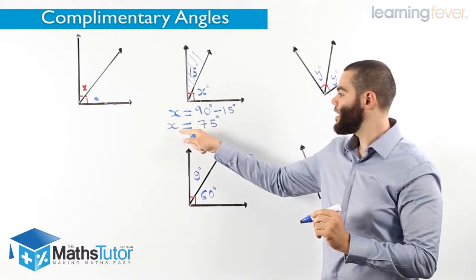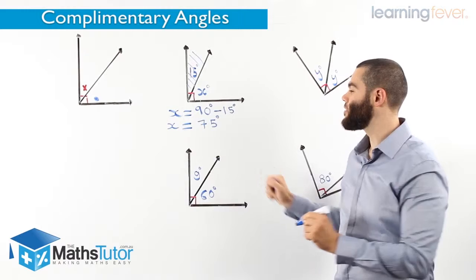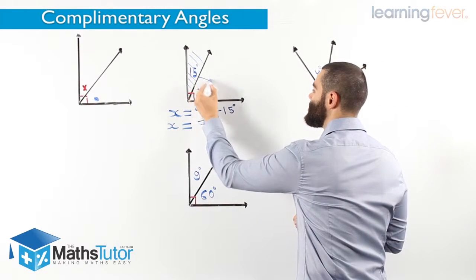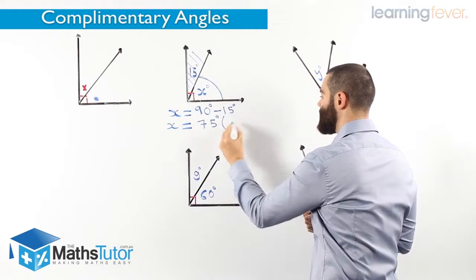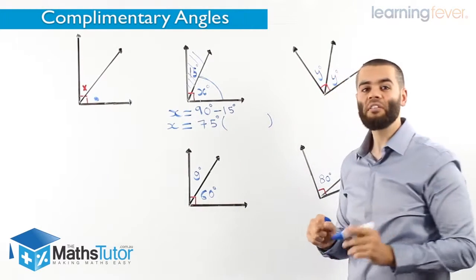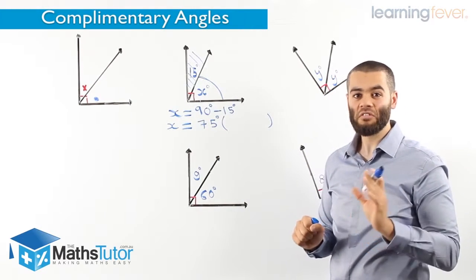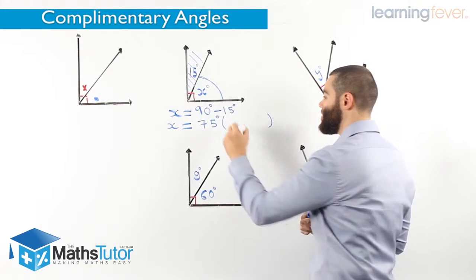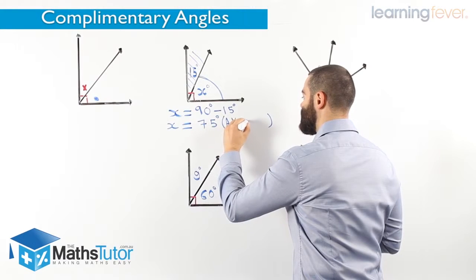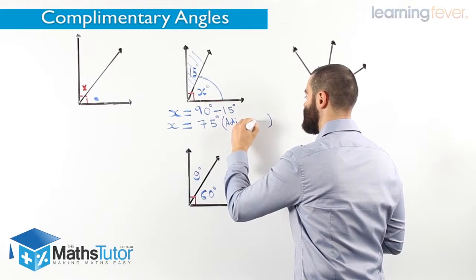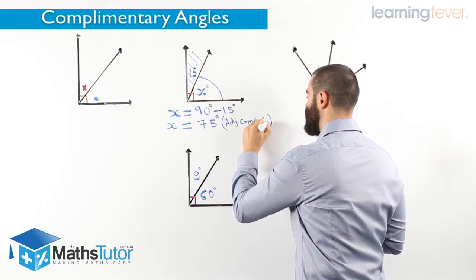So now, we realize that x equals 75 degrees, which is this section here. And as we said before, we always have to give a reason. We have to justify our answer, and in this case here, we say adjacent complementary angles.